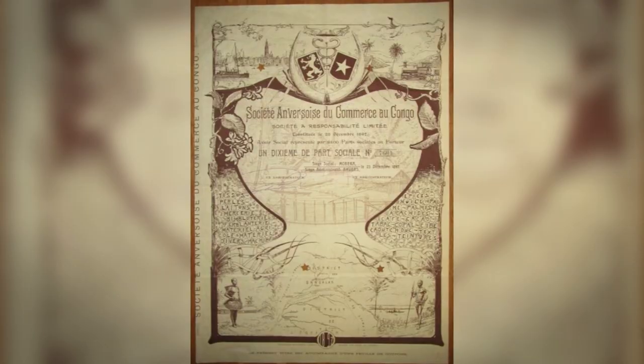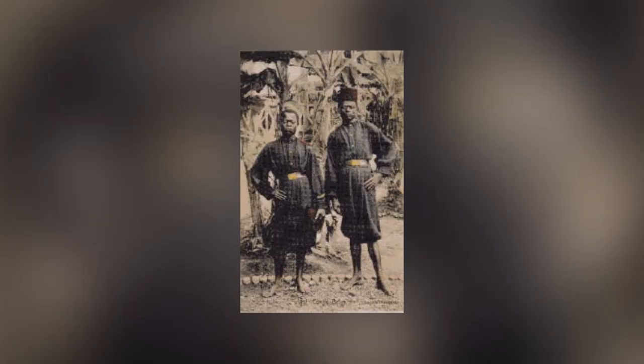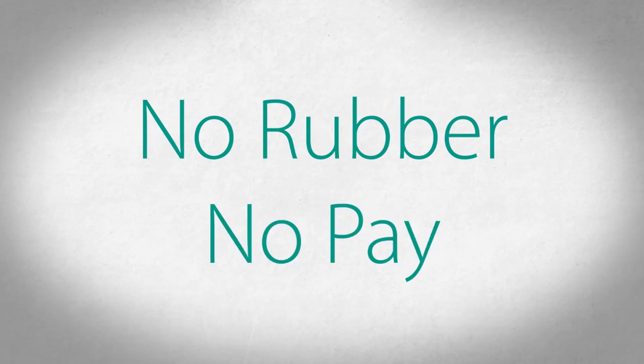Leopold couldn't exploit all this land by himself, so he handed out licenses covering about half the country to several companies such as the Anversoise and the Anglo-Belgian Indian Rubber companies — companies in which Leopold himself, coincidentally, was a major stakeholder. All of a sudden, he was sitting on a gold mine. Taxes were now to be paid in the form of rubber, collected by either Leopold's army or the private militias of the rubber companies — native men with barely any training, armed with guns and machetes, paid according to the amount of rubber collected. Following the principle: no rubber, no pay.